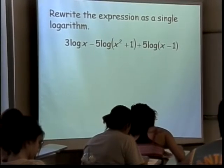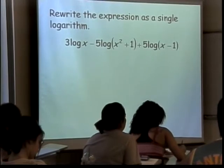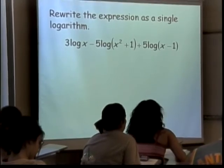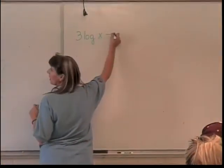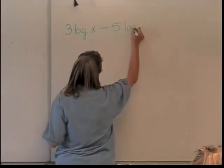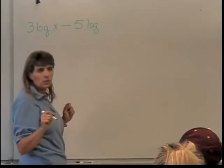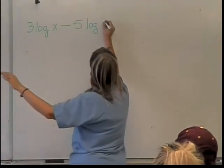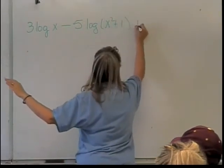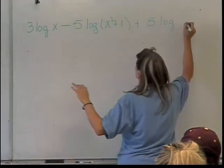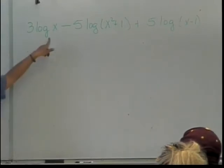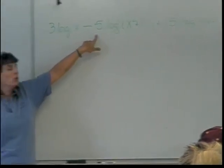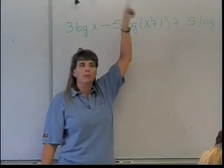But before I start putting things together, there's something I need to do first. Any ideas of what I ought to do first? I need to take care of those powers because in all of my putting together, none of the rules had coefficients on my logarithms that were not 1. So this is x squared plus 1, and this is 5 times the log of x minus 1.